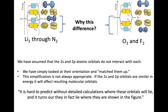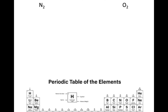Students often ask why this ordering difference occurs. Our simplest approach considers each atomic orbital overlapping with the same-orientation orbital on the other atom independently, but that simplification is not always appropriate. As Atkins notes, it's hard to predict without detailed calculations where these orbitals will lie. This is similar to anomalous electron configurations we encountered earlier, where electron-electron interactions shift energy levels — we accept the result from detailed analysis.